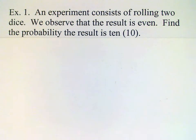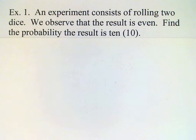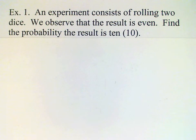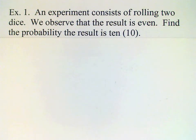In the next example we're going to be rolling dice again. This time the dice are going to be rolled behind a curtain and somebody behind the curtain looks at the outcome and tells us that the result is even — so two, four, six, eight, ten, or twelve. If we know that the result is even, we want to find the probability that the total on the two dice is ten.